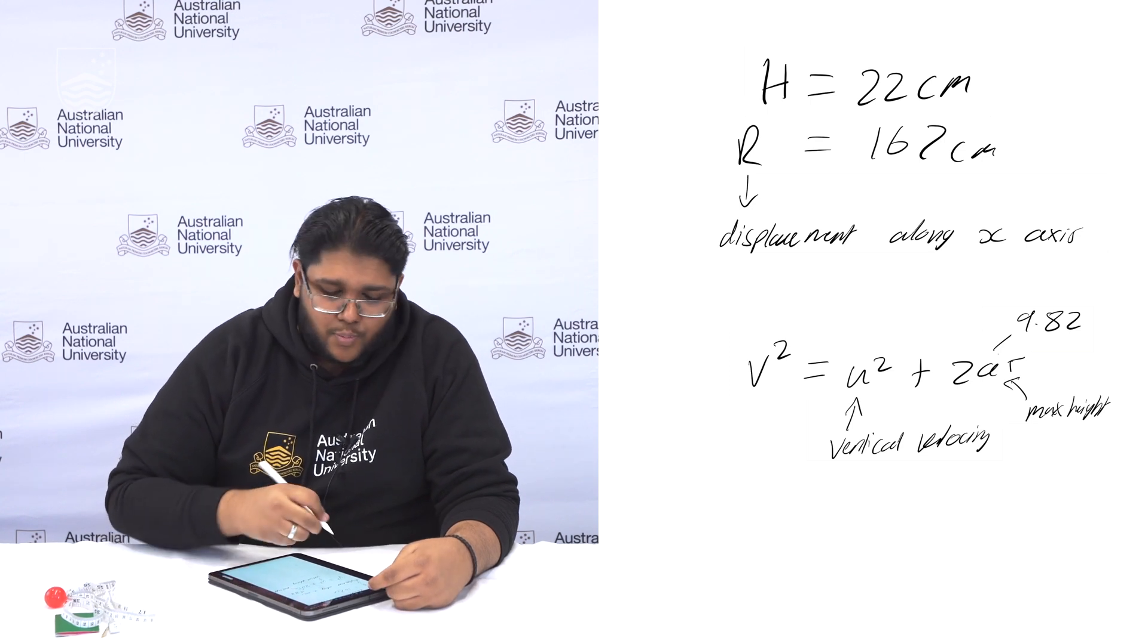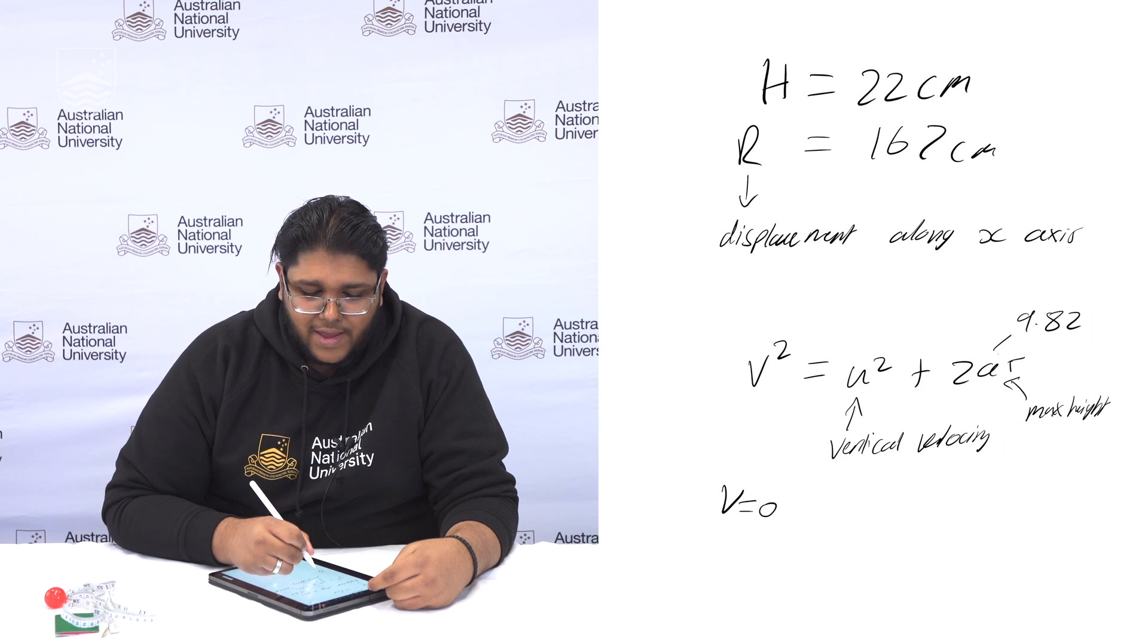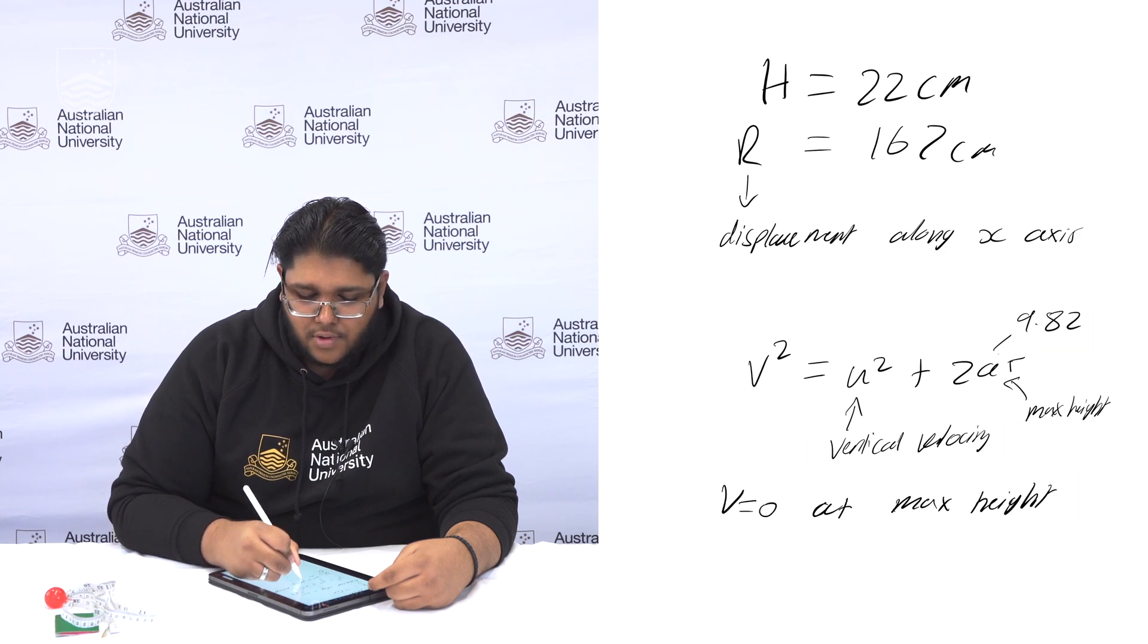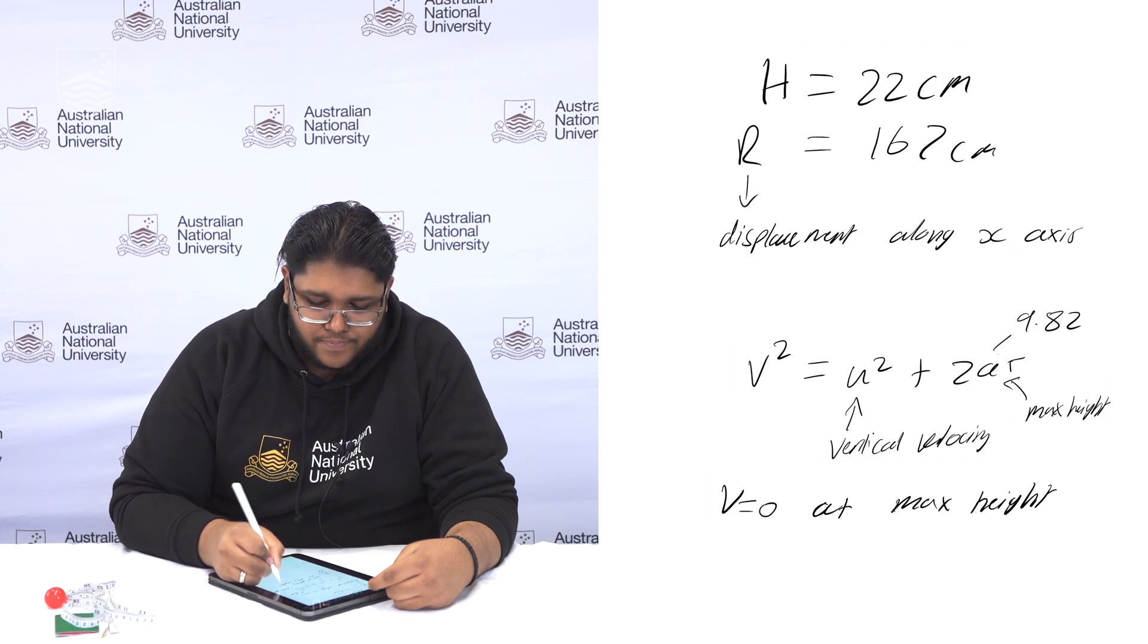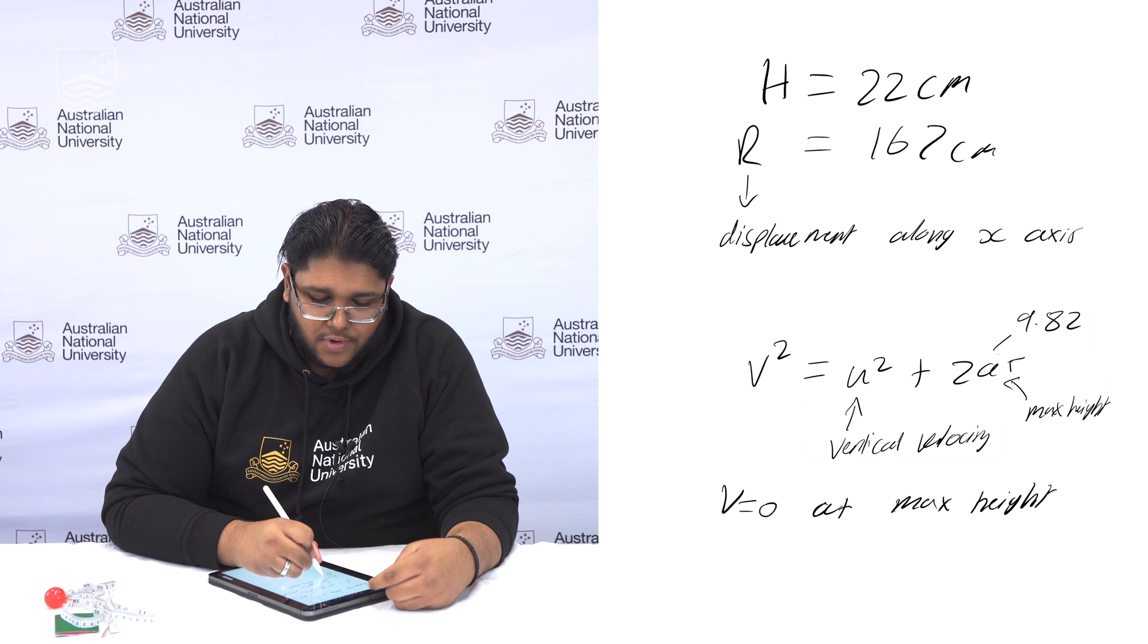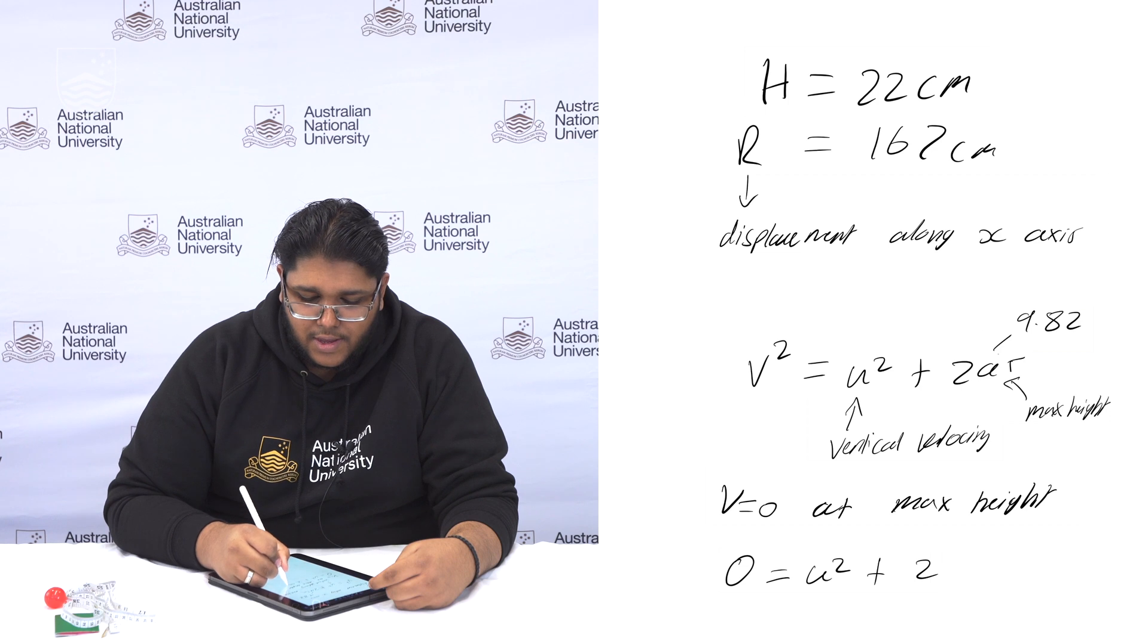This is because we're going to set v squared equals to 0 as v will equal 0 at the max height of the projectile's path. So therefore we're left with 0 equals u squared plus 2as.